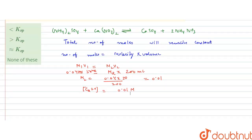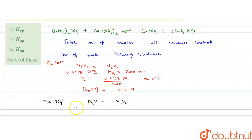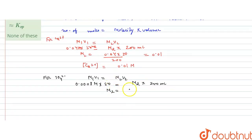Similarly, for the sulfate ion SO₄²⁻, we will write M₁V₁ = M₂V₂, because the number of moles will remain constant in this reaction. M₁ is the concentration of the ammonium sulfate, so that is 0.0008 molar, initial volume is 150 ml, and final volume is 200 ml. So M₂ calculates as 0.0008 × 150 divided by 200, which gives us 6 × 10⁻⁴ molar. This is the concentration of the sulfate ion.